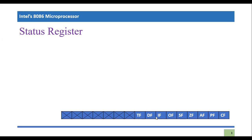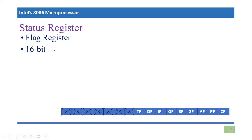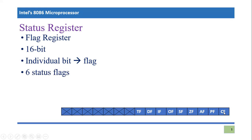As we are talking about the 8086 flag register or status register, it has 16 bits because the 8086 is a 16-bit processor. But out of those 16 bits, only a few are implemented. The flag register is 16-bit, and each individual bit is known as a flag. Six status flags are discussed here, which basically show certain statuses.